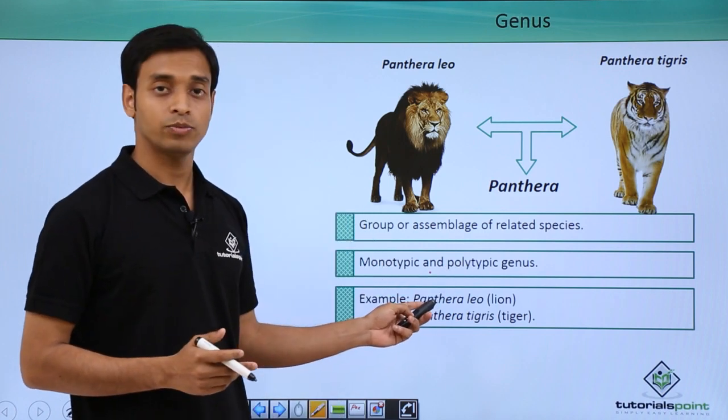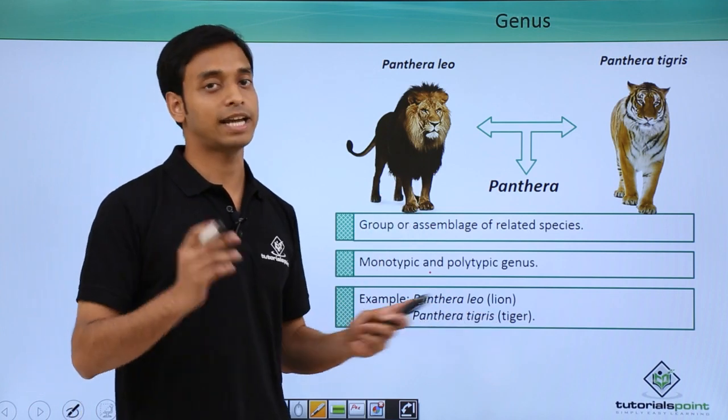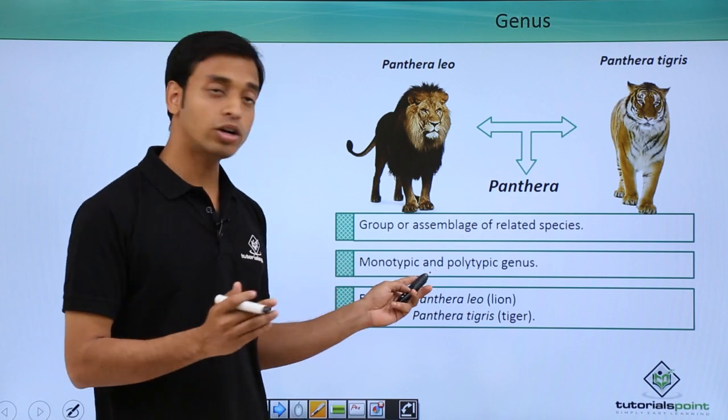An example of polytypic genus is Panthera. For example, Panthera leo is lion and Panthera tigris is tiger. So we can see it has got different species.